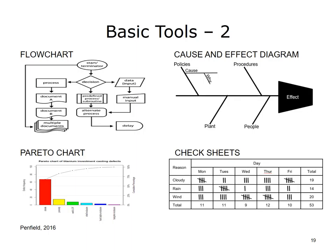Pareto chart: Vilfredo Pareto, an Italian economist in the 1880s, observed that 80% of the wealth in Italy was held by 20% of the population. This Pareto principle was later applied to other applications, finding that 80% of the variation of any characteristic is caused by only 20% of the possible variables. A Pareto chart is a display of the frequency of occurrences that helps to show the vital few contributors to a problem so that management can concentrate resources on correcting these major contributors.